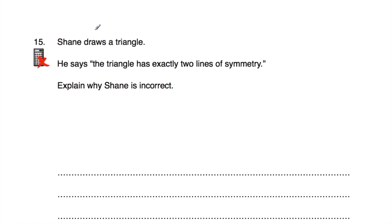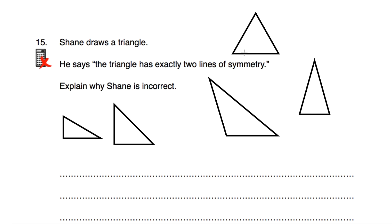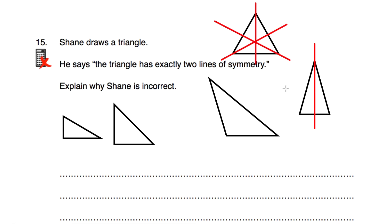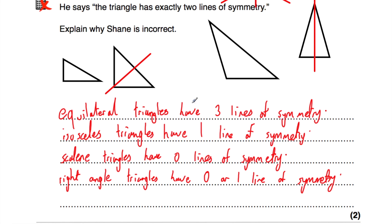Question number 15: Shane draws a triangle and says it has exactly two lines of symmetry — explain why Shane is incorrect. An equilateral triangle has three lines of symmetry. An isosceles triangle has one line of symmetry. A scalene triangle has zero lines of symmetry. A right-angled isosceles triangle has one line of symmetry, and other right-angled triangles have zero. No triangle can have exactly two lines of symmetry, so Shane is incorrect.